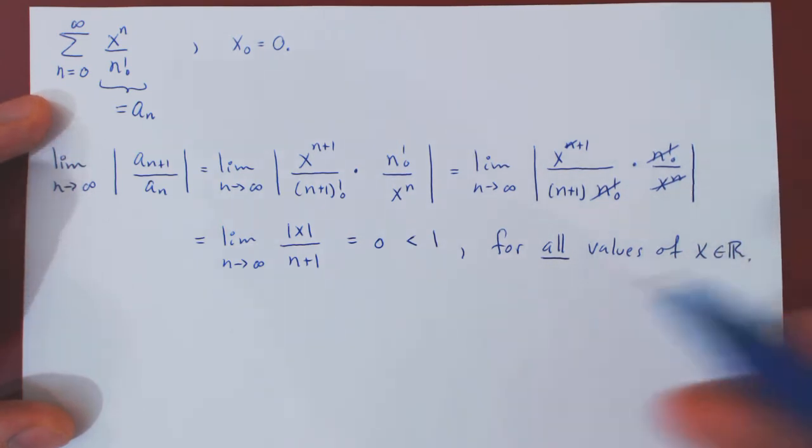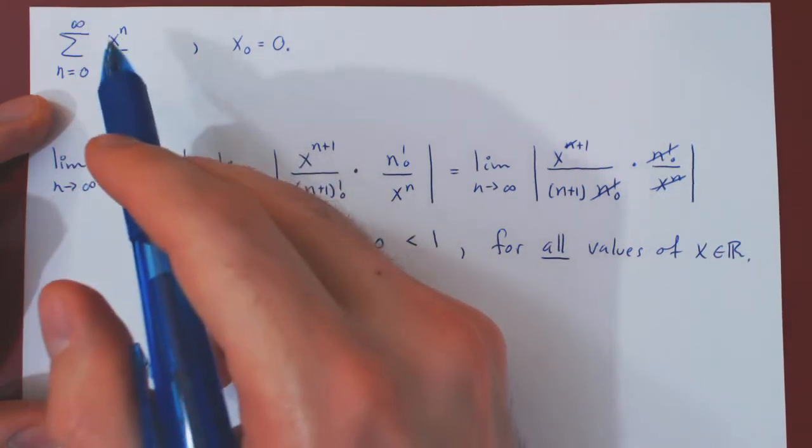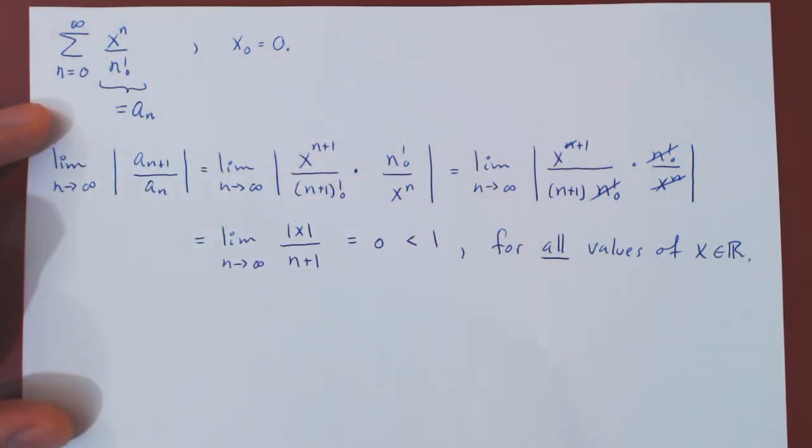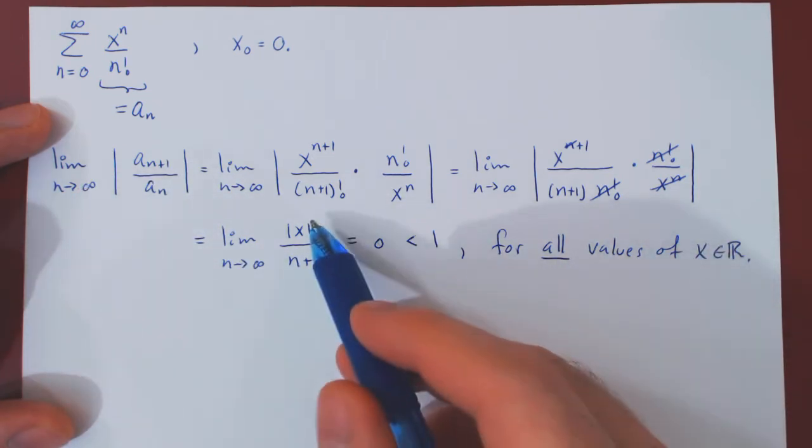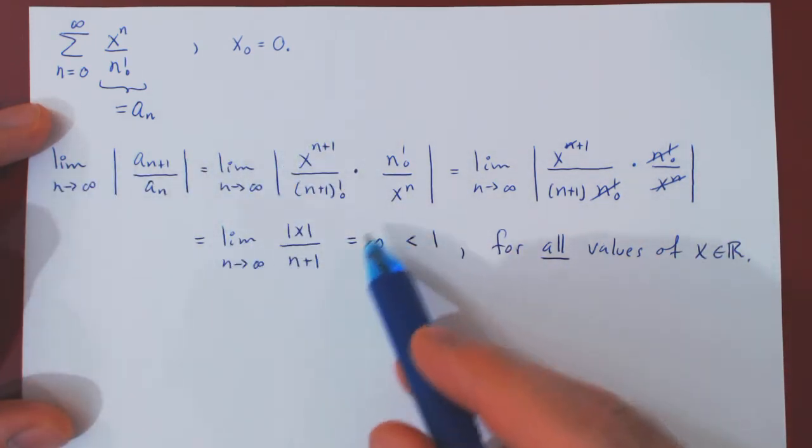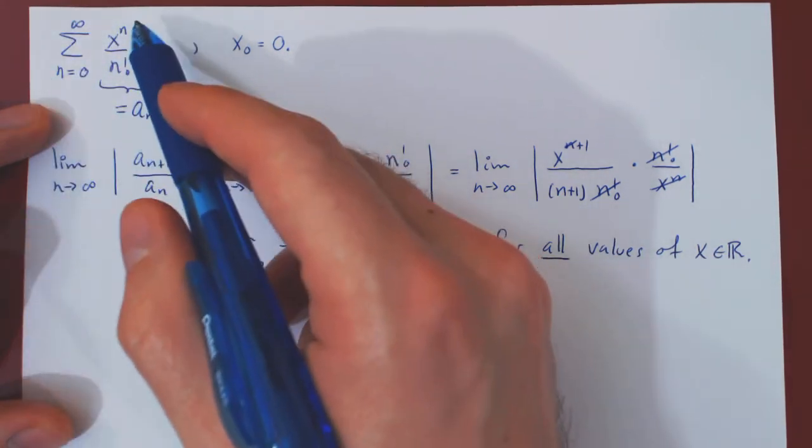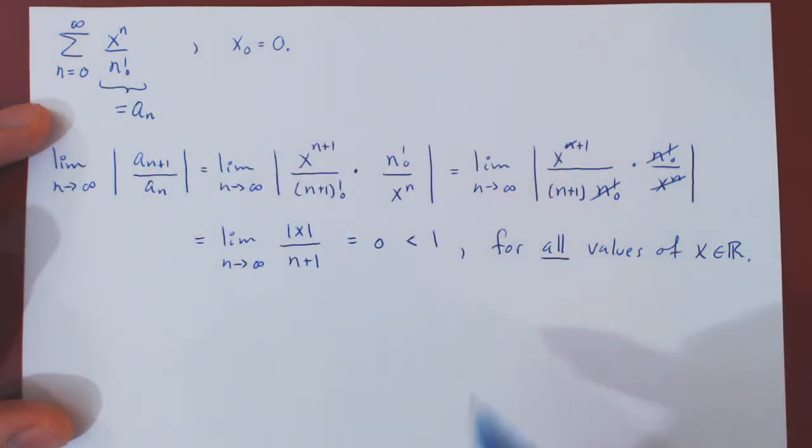And so we're done. We were asking to find all values of x for which the power series converges, and the answer is, no matter what value of x we choose, the ratio test returns a limit of 0, which is strictly less than 1. So the power series converges absolutely for all values of x.